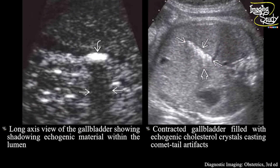Another picture of the gallbladder in longitudinal section shows the hyper-echogenic luminal structure casting posterior acoustic shadow. It's very difficult to say from this image whether there is a single stone or multiple tiny stones at a single point. On the right image, you can see the hyper-echogenic material-filled gallbladder lumen showing some comet-tail artifacts indicating the content as cholesterol crystals.